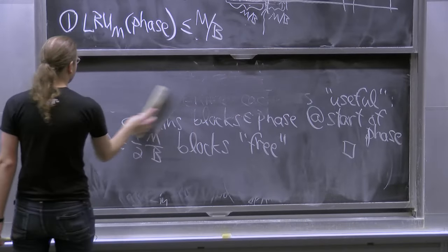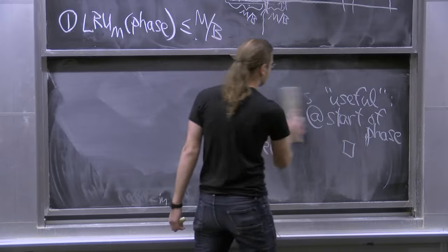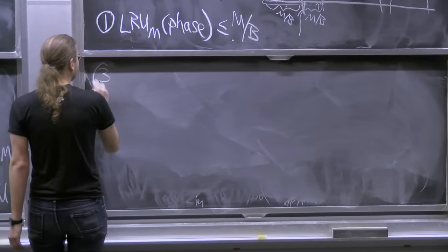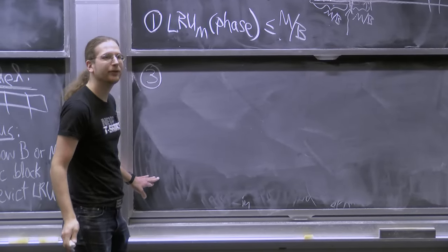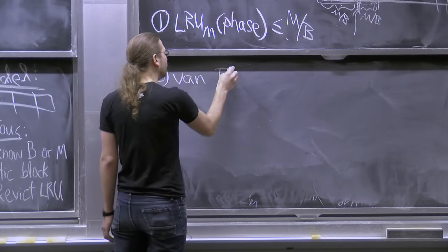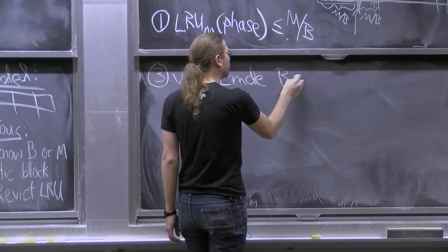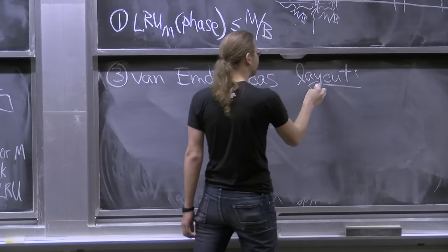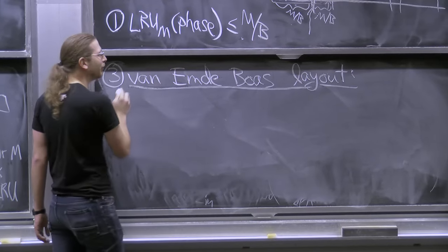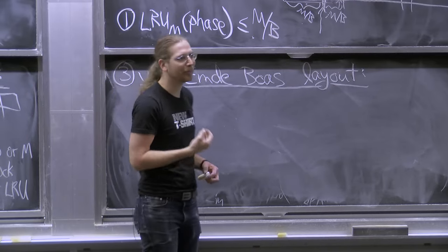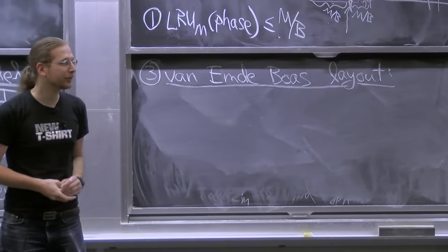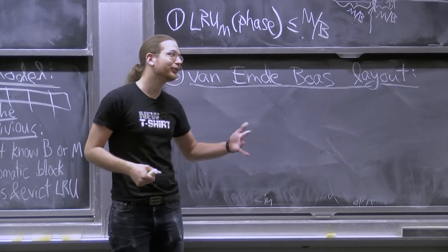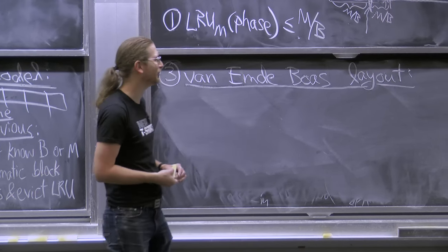But I want to do this cache obliviously — without knowing B. The solution is inspired by Van Emde Boas, proposed by Harold Prokop in his MEng thesis. The idea is to take all items, put them in a perfectly balanced binary search tree (not a B-tree, since we don't know B), and then choose a clever layout order for the nodes in memory.